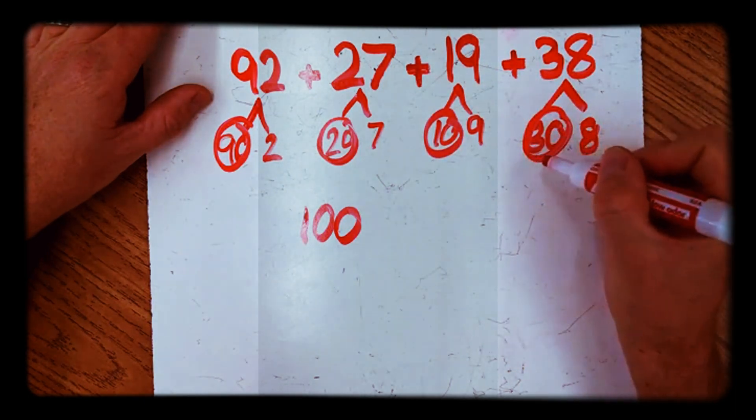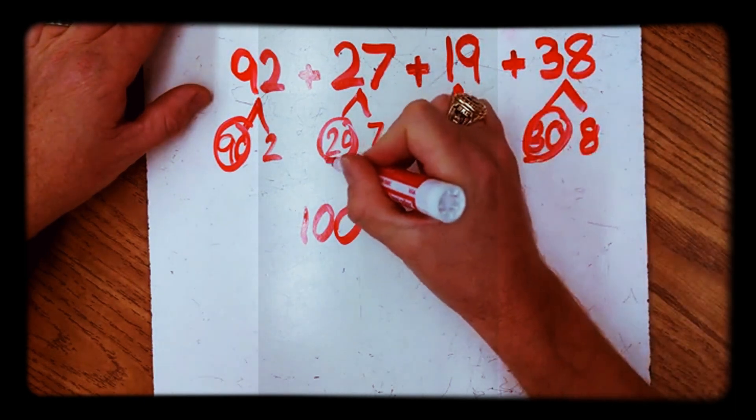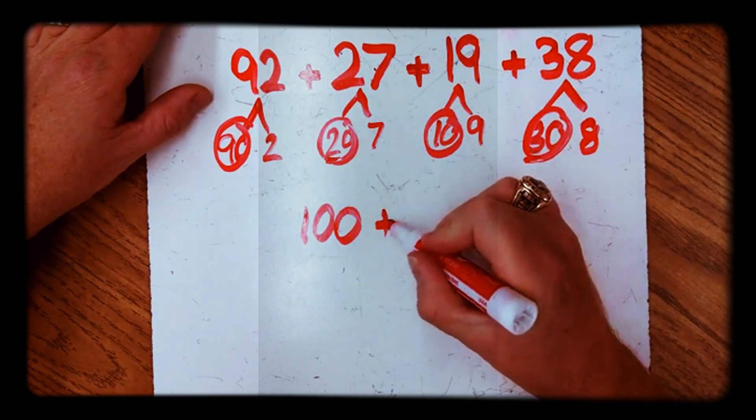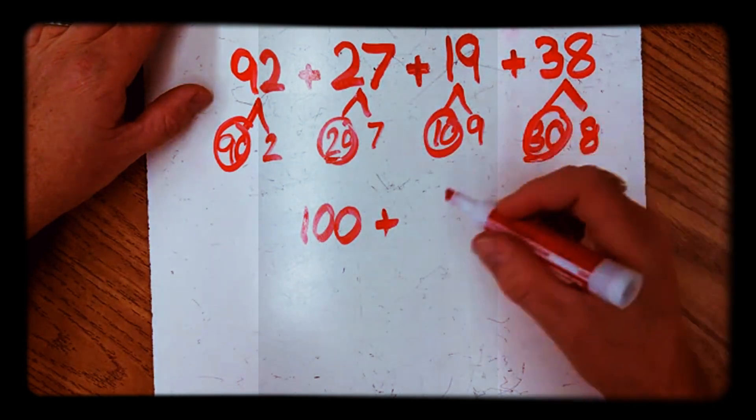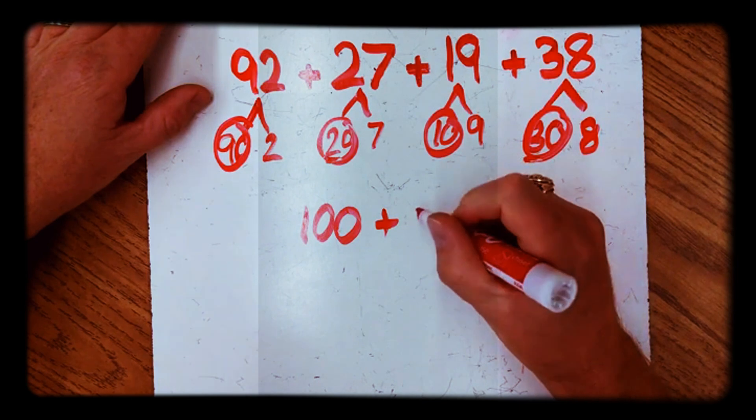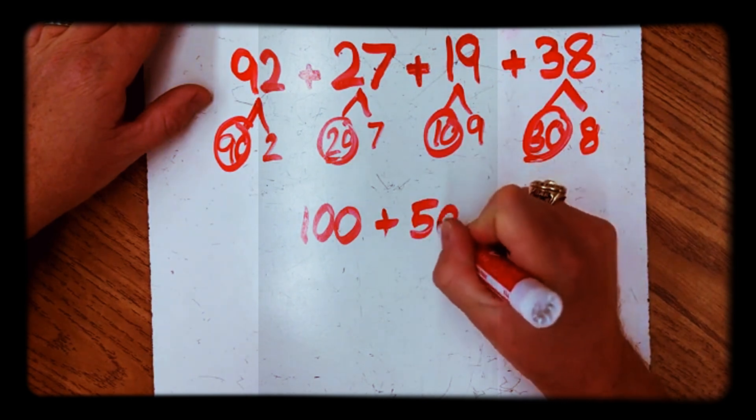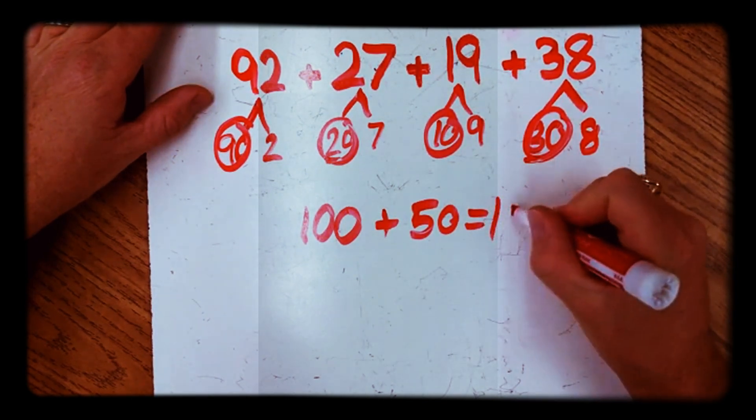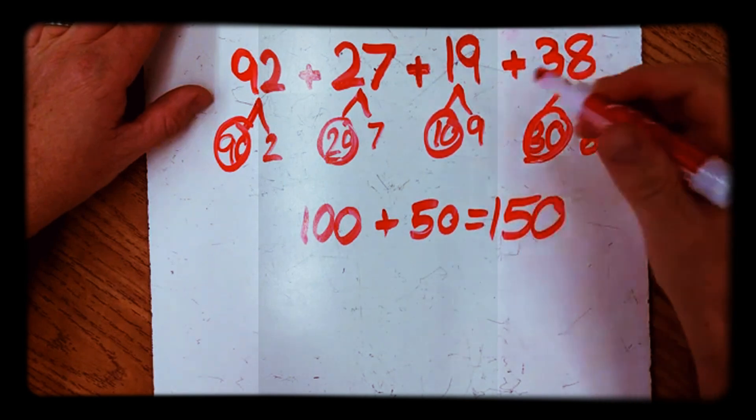Go for the other ones, that's 20 and 30. If you think of your basic facts, 3 plus 2, that's 5. So just since we have 30 and 20, just tack a zero behind it if that helps you. That would give you 50. And now we're at 150. That's just with our tens.